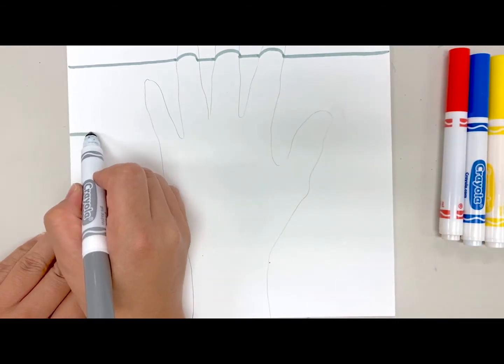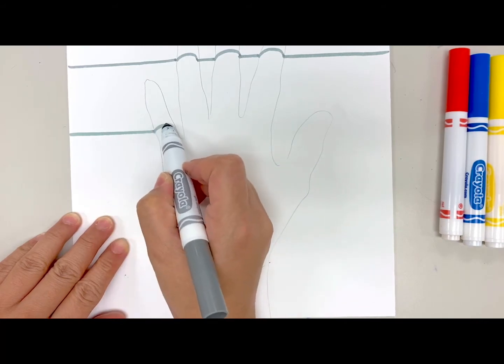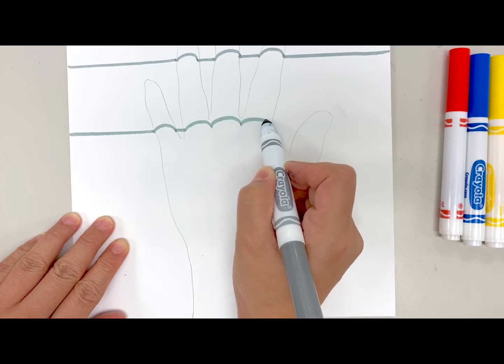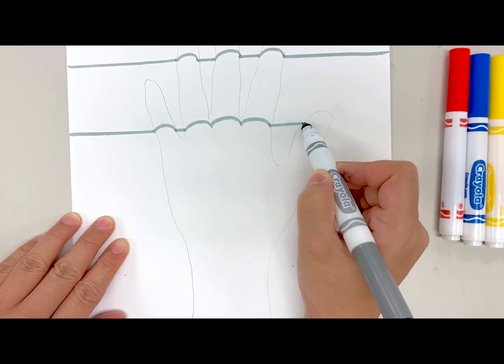Repeat this process a little bit more down, curving the lines where the knuckles would be and where the thumb is also.